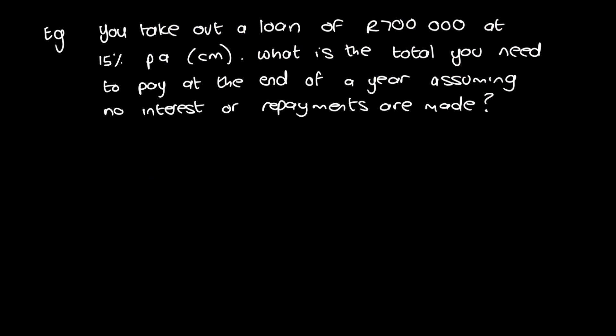So in this example, you take out a loan of 700,000 at 15% per annum compounded monthly. What is the total you need to pay at the end of a year assuming no interest or repayments are made? The first thing to consider is the fact that it mentions it's compounded monthly. So that's going to clue you into what formula you need to use. It's the compound interest formula. So future value equals present value times 1 plus i_m to the power of n.